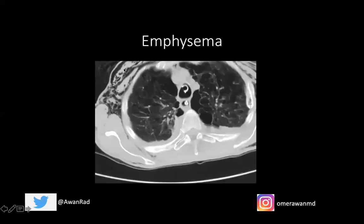On CT, you see dark holes throughout the lungs — these are destroyed alveolar airspaces representing emphysema. Normal lung parenchyma shows some vascularity and secondary pulmonary lobule structures, but in emphysema you have complete dark lucency or hypodensity. You can see emphysema along the periphery and within the center of the lung parenchyma. All these dark spaces represent emphysema on CT.